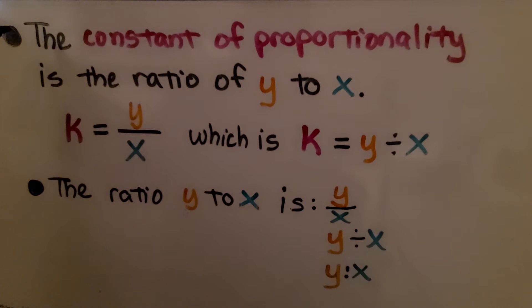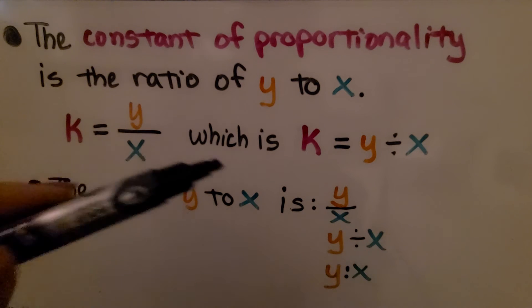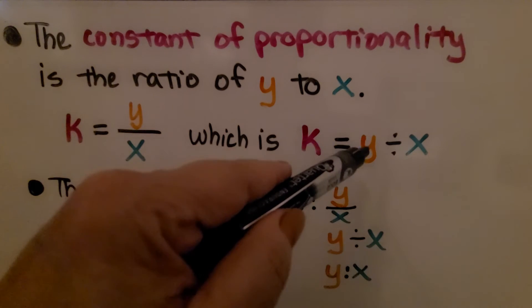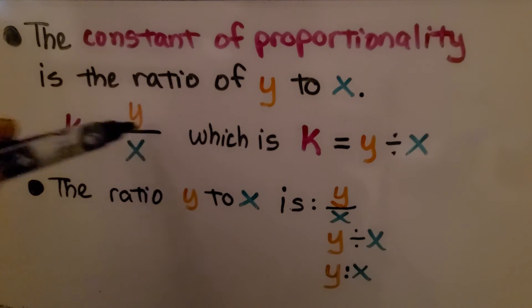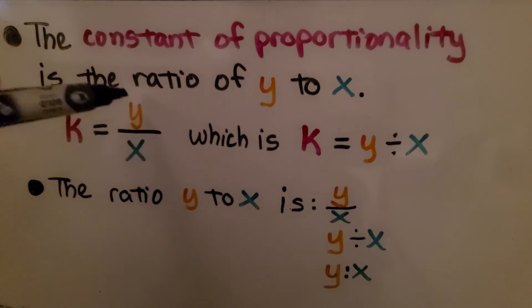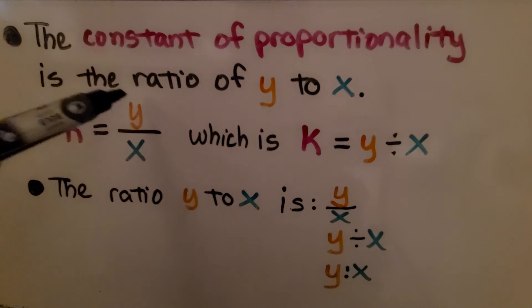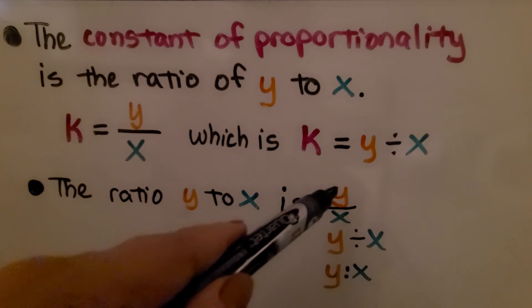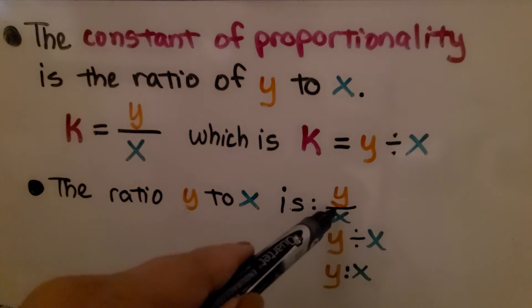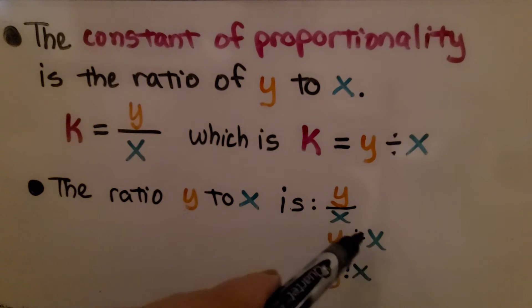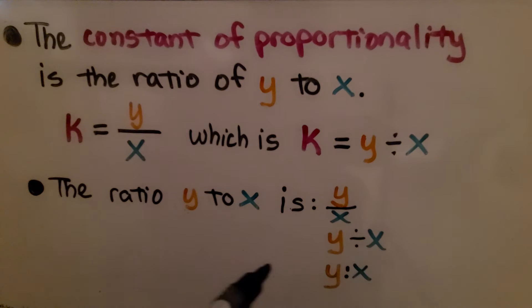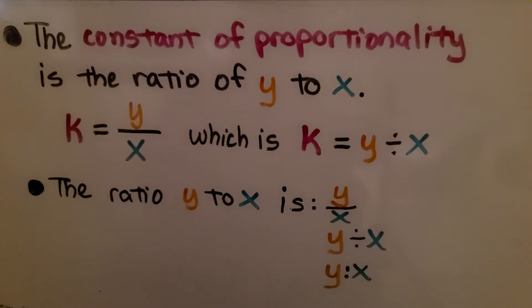The constant of proportionality is the ratio of y to x, meaning k = y divided by x. Remember, the fraction bar means division. This ratio can be written as a fraction y over x, as y divided by x, or as y to x using a colon — y:x.